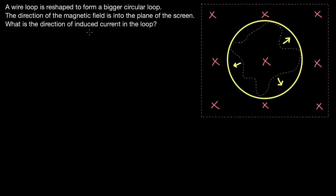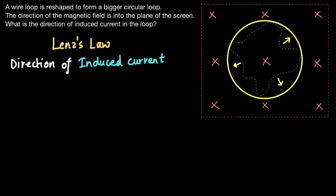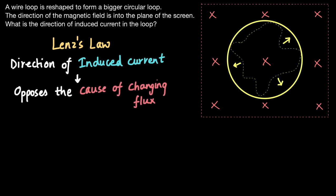Now let's look at the second example. Here we have a wire loop which is reshaped to form a bigger circular loop. A randomly looped wire has been stretched to form a bigger circular loop. The direction of the magnetic field is into the plane of the screen, as shown by all the crosses. The question is to figure out the direction of the induced current. We can again use Lenz's law, which says the induced current always opposes the cause of changing flux.